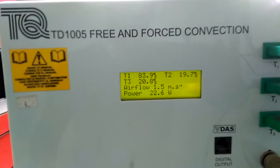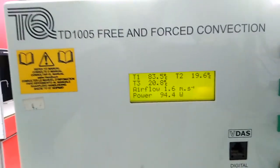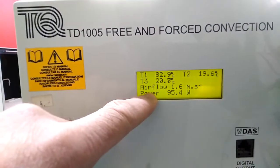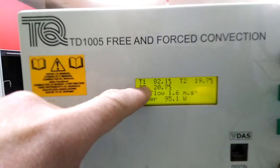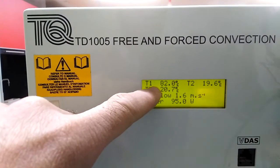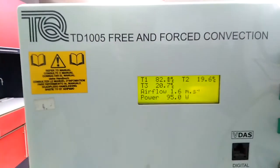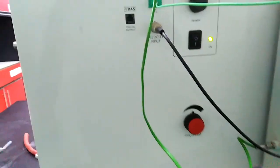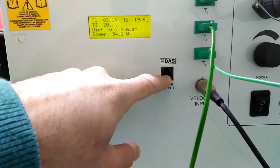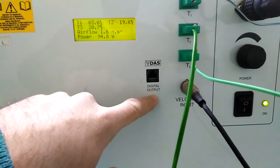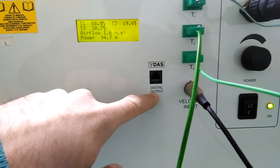To monitor the results, we have a monitor here displaying the power and air flow along with three temperature values: T1, T2, and T3. We also have a cable connecting to a computer for digital output.